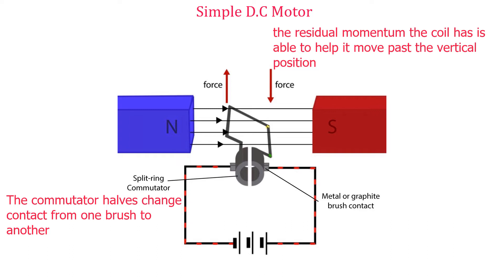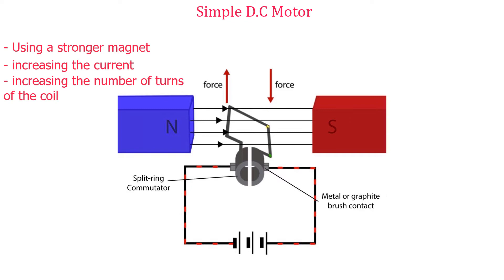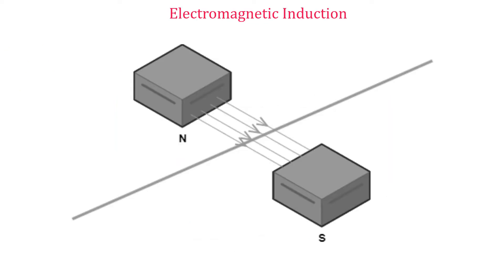The commutator then changes contact from one branch to the other, reversing the current through the coil. The left side of the coil will now be on the right side, acted on by the downward force, while the right side will be on the left, acted on by an upward force. This keeps the coil rotating clockwise. The turning effect of the coil is increased by: one, using a stronger magnet; two, increasing the current; and three, increasing the number of turns of the coil.